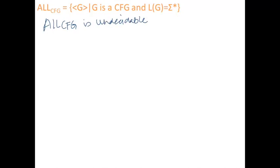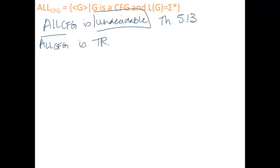Our next language is ALL_CFG, which is the set of strings G — the encoding of a grammar — where G is a context-free grammar and the language of the grammar equals sigma star, meaning the grammar generates all strings. There's a proof that ALL_CFG is undecidable — this is in Sipser theorem 5.13. We're going to use the fact that if a language is Turing recognizable and its complement is Turing recognizable, it must be decidable, to show that ALL_CFG is also not Turing recognizable. We'll do this by showing that ALL_CFG-bar is Turing recognizable, meaning ALL_CFG is co-Turing recognizable.